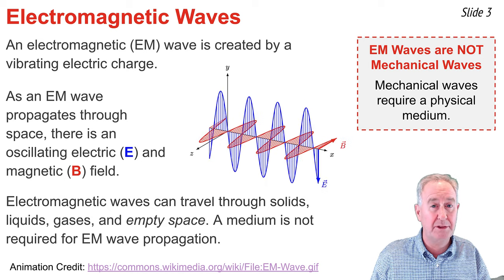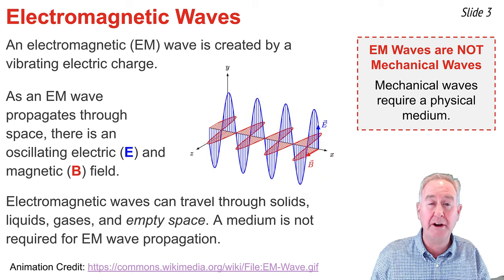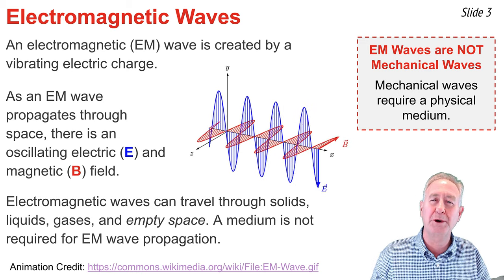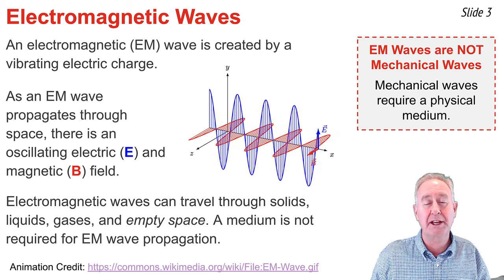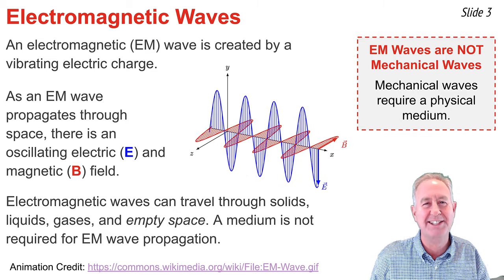Electromagnetic waves are quite different. They can travel through a vacuum because they don't require physical matter in order to propagate. An electromagnetic wave can also travel through a solid, a liquid, and a gas.